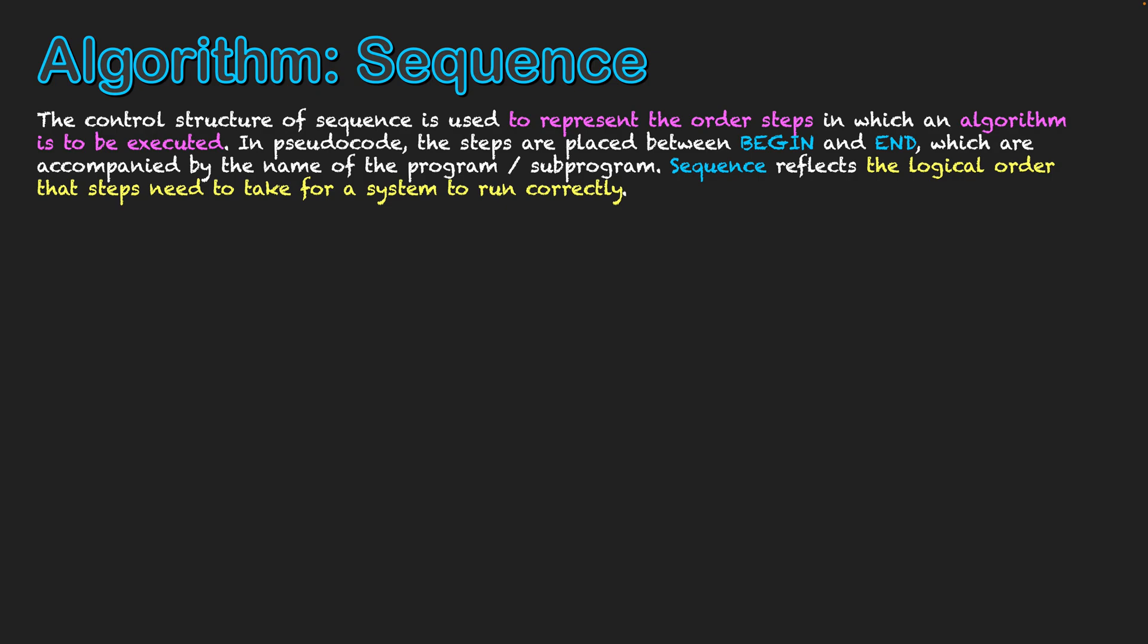What sequence is all about is ensuring that when we create our algorithm, our steps are in an order that makes sense. If the steps are not in order, even though they might be correct, the actual program is not going to run correctly.